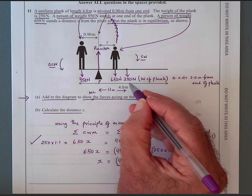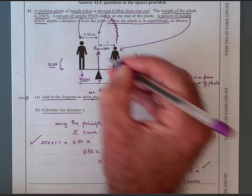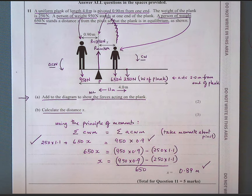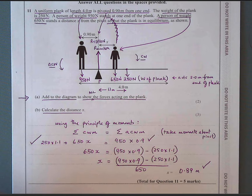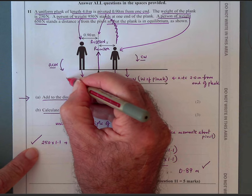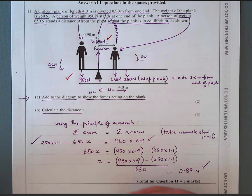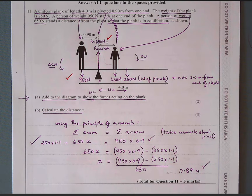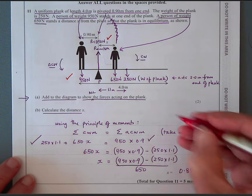The reaction must add up to 950 plus 650 plus 250 to be balanced in the vertical direction. 950 plus 250 is 1,200, so the reaction should be 1,850 Newtons upwards. You get 1 mark for showing all the downward forces and 1 mark for showing the reaction correctly as 1,850 Newtons.